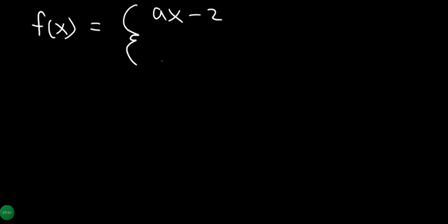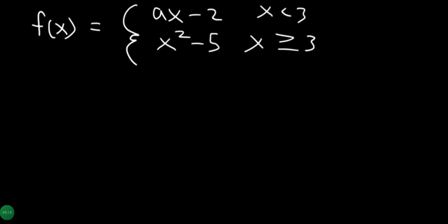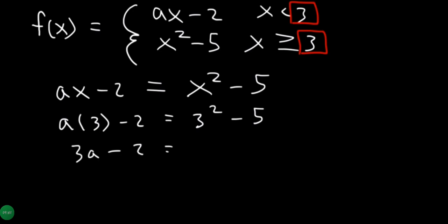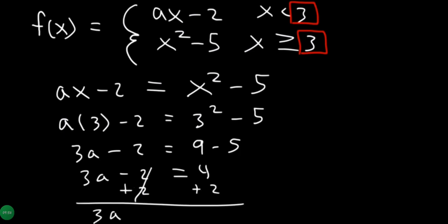Another example: f(x) equals ax minus 2 when x is less than 3, and x squared minus 5 when x is greater than or equal to 3. For continuity at x equals 3: a times 3 minus 2 equals 3 squared minus 5. So 3a minus 2 equals 9 minus 5, which gives 3a minus 2 equals 4, so 3a equals 6, and a equals 2.